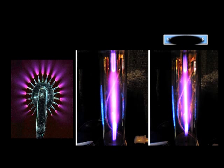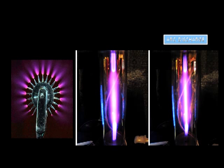Arc discharge is an electrical breakdown of the gas — for example, ionization — that produces a plasma. The electron production method which maintains this plasma is thermionic emission, which is the heat-induced flow of charge carriers, for example electrons or ions.